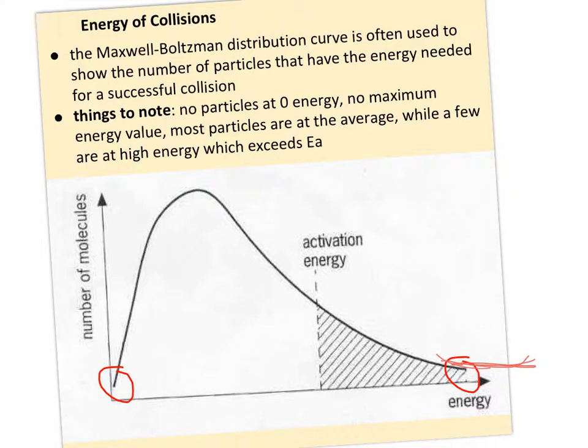But most particles are at the average, and very few are at the level of activation energy. So one way to speed up reaction rate is to either give more energy to more molecules, or you could also change the activation energy. Another possibility is to increase the number of them that have the right geometry.